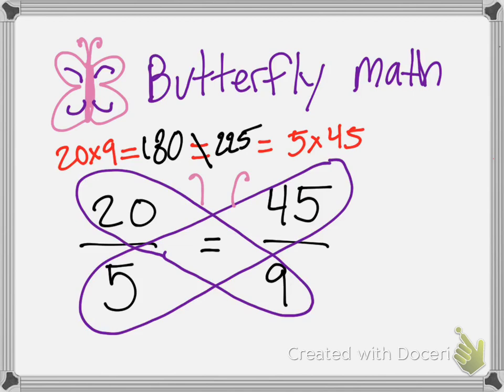And which fraction's bigger? Which fraction's bigger, Shiley? Yeah, the one with the 225. So this fraction's bigger. That's a quick way we can tell if things are equivalent and which one's bigger. This helps if we can't necessarily get it down to a unit rate. You can use butterfly math.